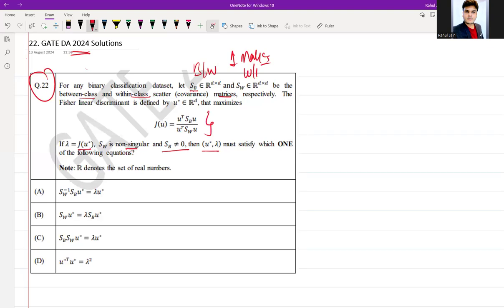For Fisher linear discriminant, it is designed to find projection vector u* that belongs to R to the power d that maximizes the ratio between between-class scatter and within-class scatter.